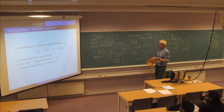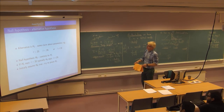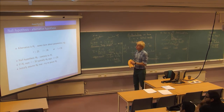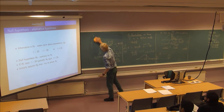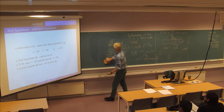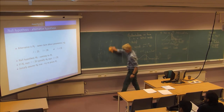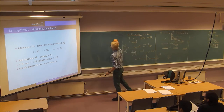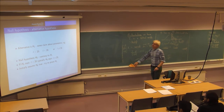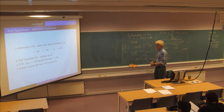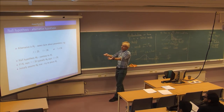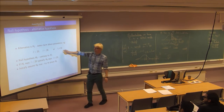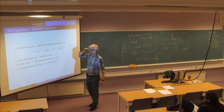Typically we start with the alternative hypothesis, which is usually something we want to prove — some claim we wish to prove statistically. If my parameter is called beta, it could be beta greater than 20, beta less than 20, or beta different from 20. It's usually one of these three alternatives.